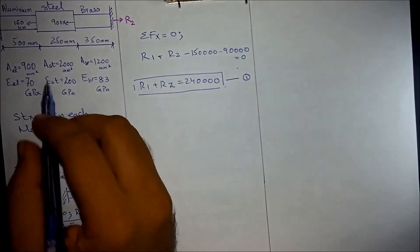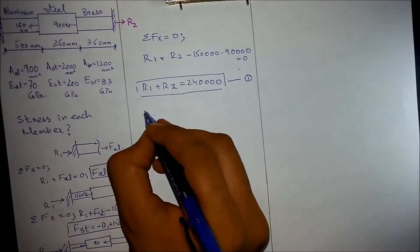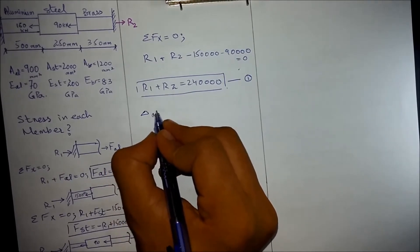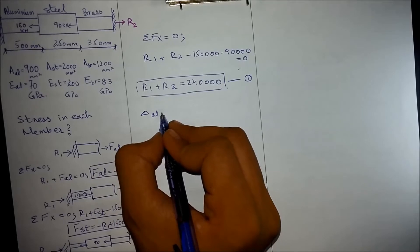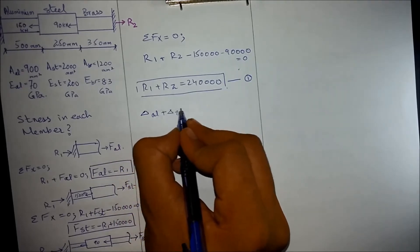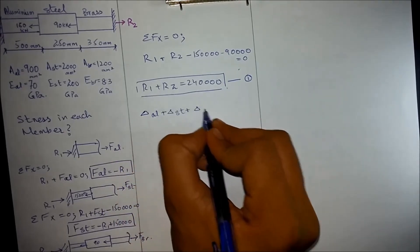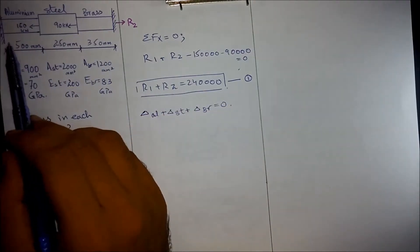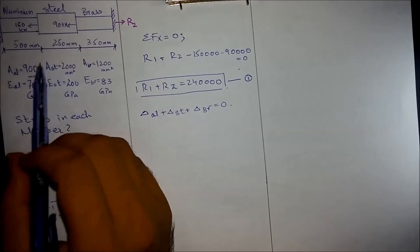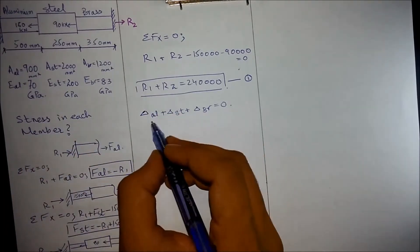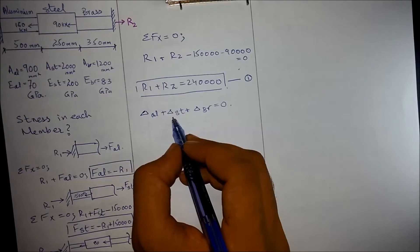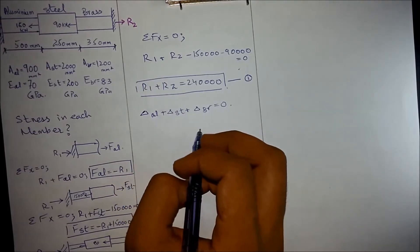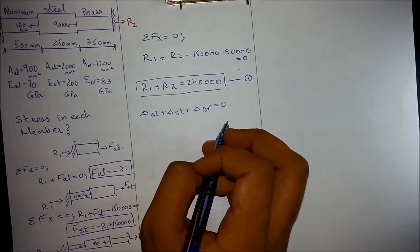The compatibility equation for the given structure is: the change in length of aluminium plus the change in length of steel plus the change in length of brass equals zero. This means from both ends the supports are fixed and the deformation occurs within the members — if one member contracts, the rest will be in tension, so they cancel out and the total is zero.